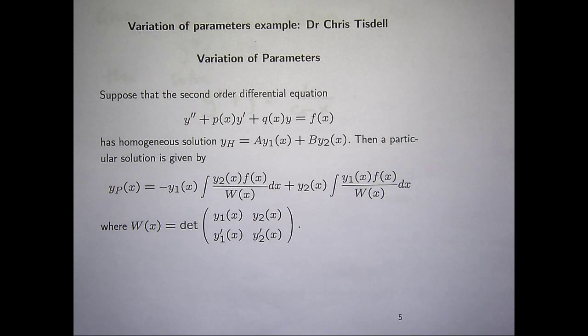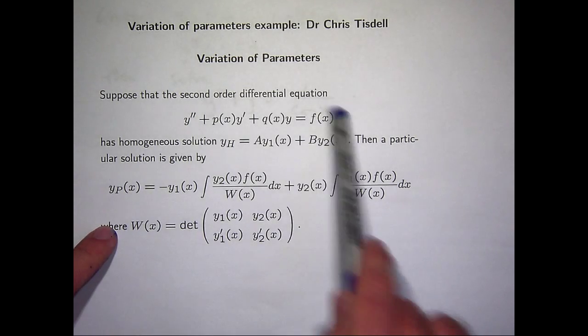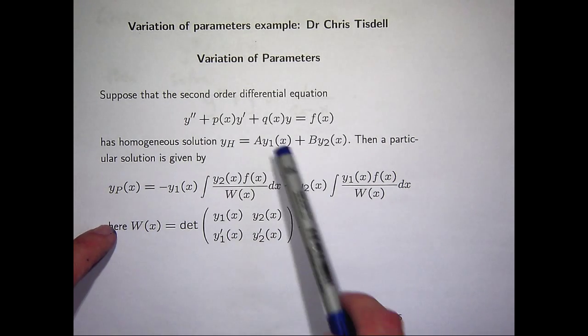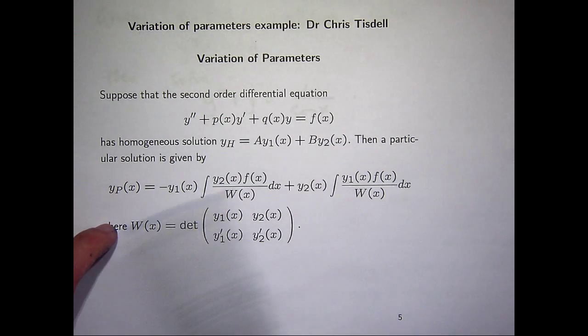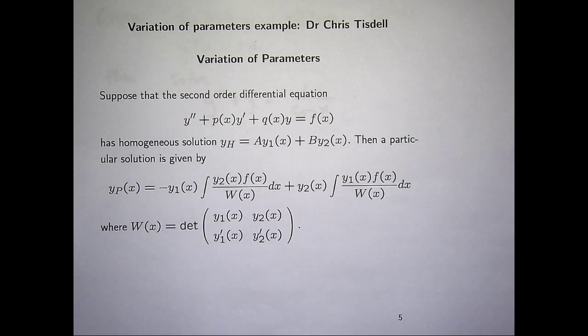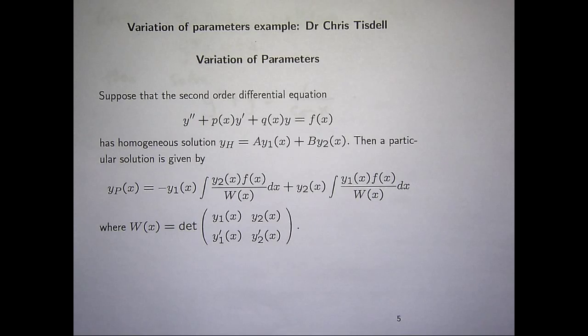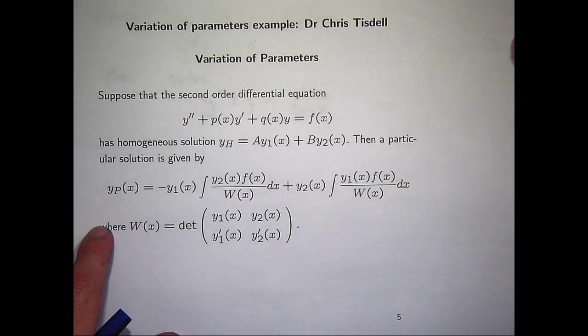Well, the variation of parameters method says that I can build a particular solution to this problem from the y1 and the y2 in the following way. So W here is just the Wronskian. It's the determinant of this particular matrix. So let's have a look at an example and see how it works out.